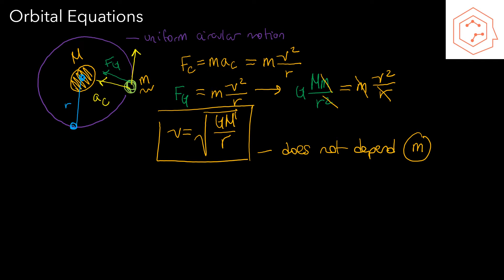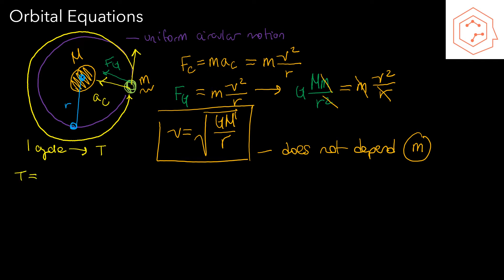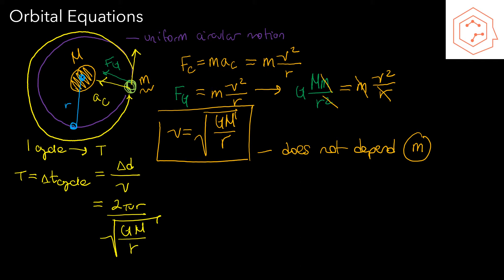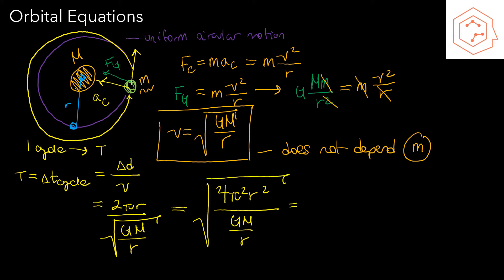Our second goal is to find the time for one complete revolution, or the period. The period equals the distance of the orbit divided by the velocity. The distance is the circumference, 2πr, divided by the velocity √(GM/r). Simplifying, we place everything under the square root to get 4π²r²/(GM/r), and bringing r to the top gives the orbital period T = √(4π²r³/GM).